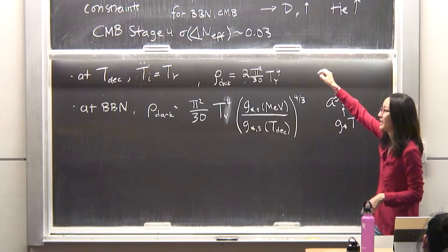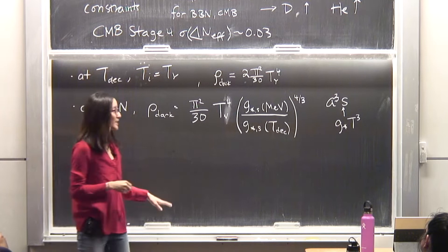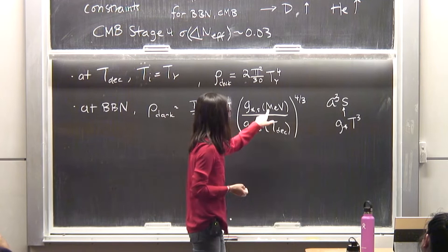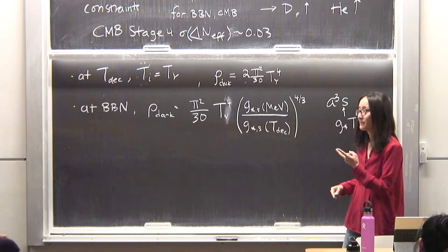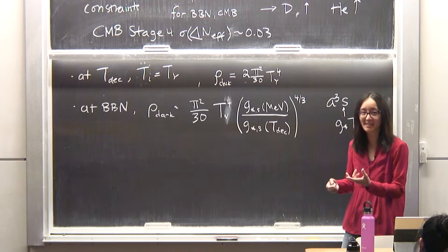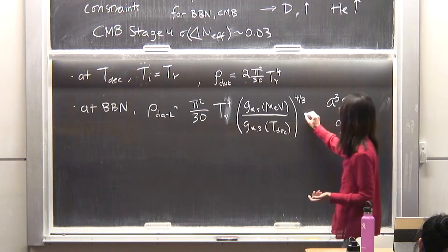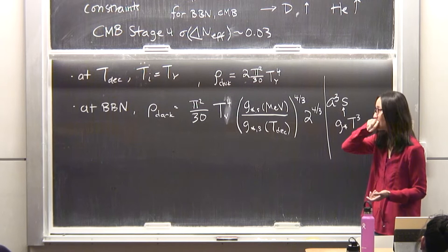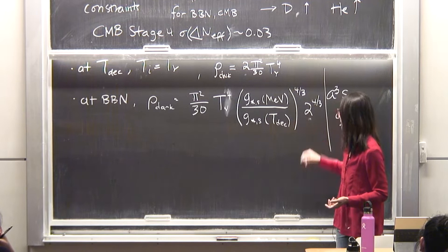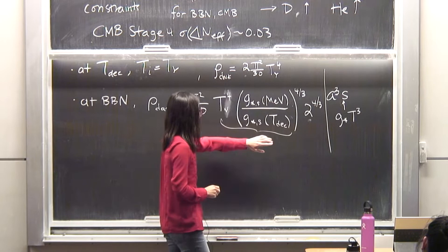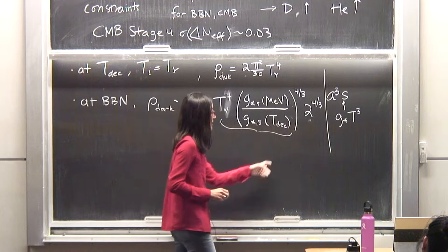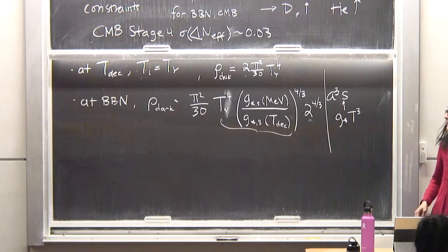Additionally, if in the dark sector the annihilation process XX → VV happens before an MeV temperature, then a similar process to what happens in the standard model occurs: two degrees of freedom reduce to one as the dark matter annihilates, raising the temperature of the remaining radiation by a factor of 2^(1/3). So I put a factor of 2^(4/3) in the expression. This factor accounts for freeze-out in the dark sector; the G-star ratio accounts for the standard model bath heating up after decoupling. This all applies for dark matter mass above roughly an MeV.